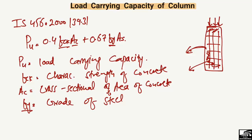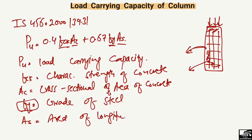FY is the grade of steel — that is, the strength of the steel bar used. AS is the area of the longitudinal reinforcement. It should be kept in mind that this area is only for the longitudinal reinforcement, not the transverse reinforcement.